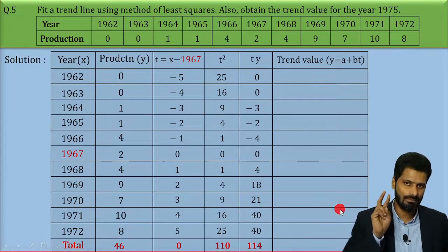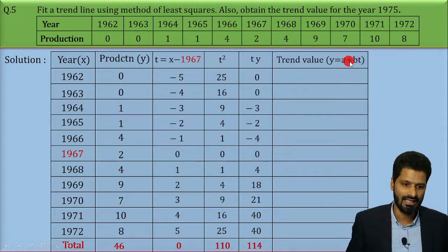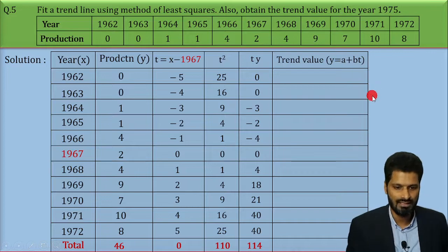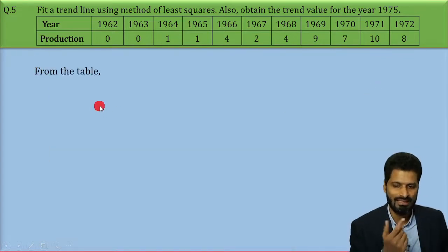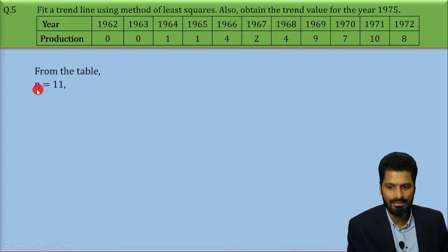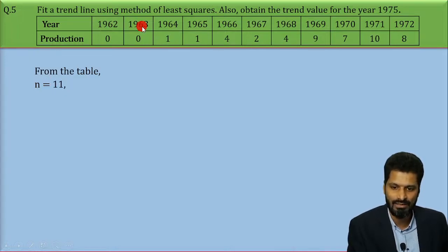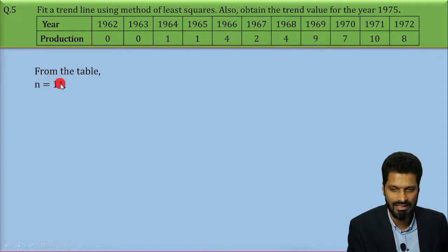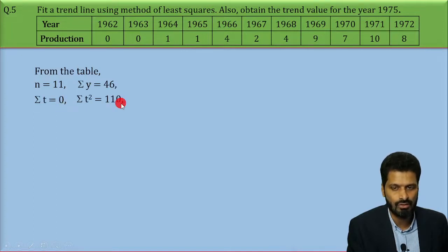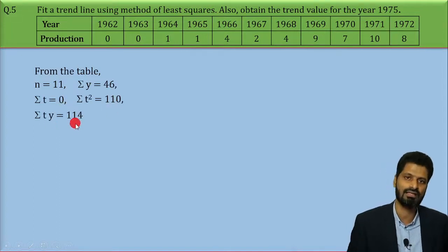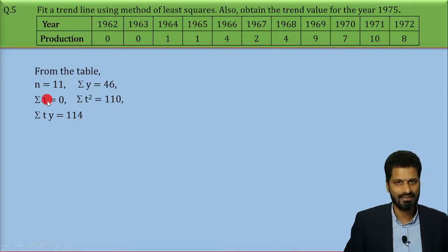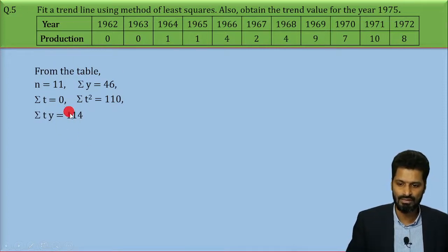Step number 2: we need to find the values of a and b. From the table, n = 11 total observations. Sum of y = 46, sum of t = 0, sum of t squared = 110, and sum of ty = 114 — obtained from the previous tabulation step. We need to find a, b, and the production for year 1975 — overall three unknowns. For the least square method we have three equations to solve them.